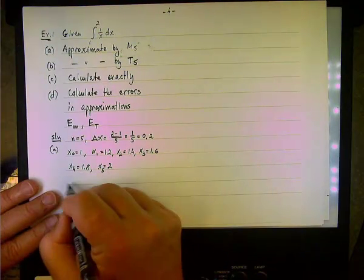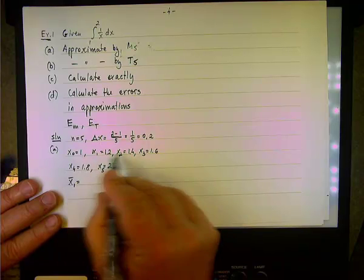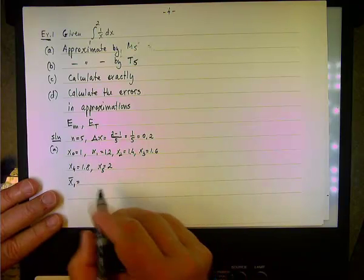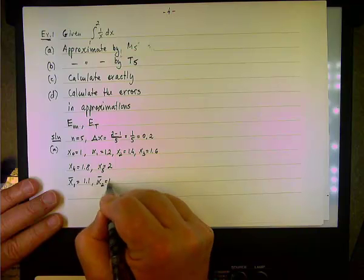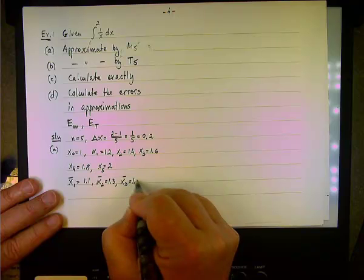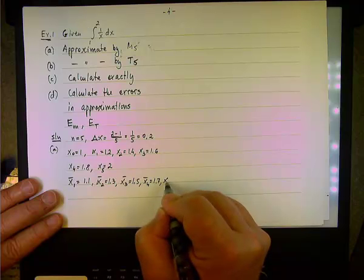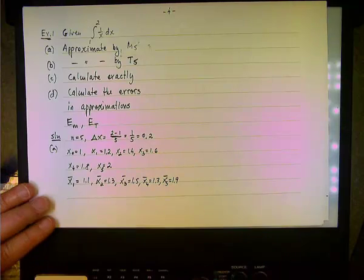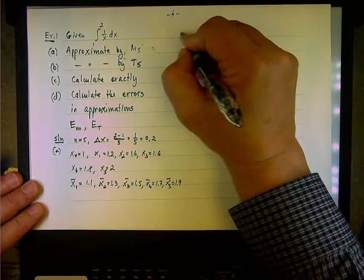So what are the midpoints? We have x bar 1, x bar 2, x bar 3, and so on. So we have those values, and now we're ready to calculate M sub 5.